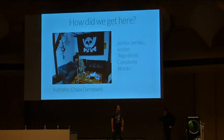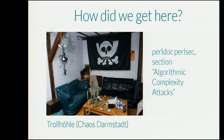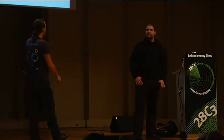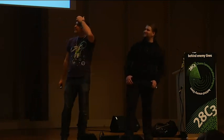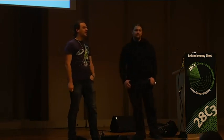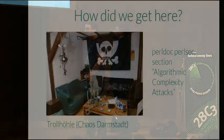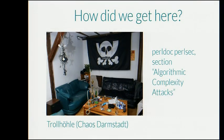How did we get here? What you can see on this slide is our local hackerspace, the Trollhöhle, which is part of the Chaos Darmstadt Erfa — that's where we usually meet. One day we were sitting in the kitchen discussing hash tables for some reason. I remembered there was something in the Perl man page, in the section called 'algorithmic complexity attacks,' and that's how we got started. We then looked at all the other languages to see if they actually fixed something there as well, or maybe they just missed it.